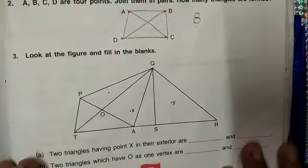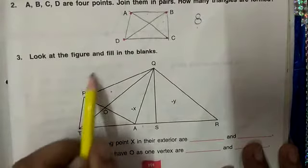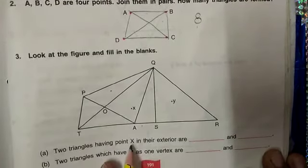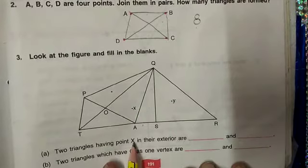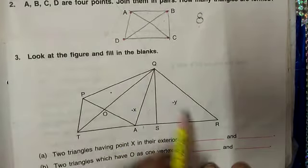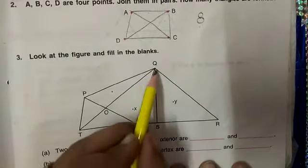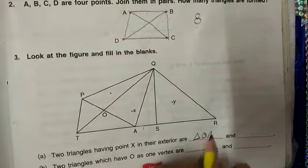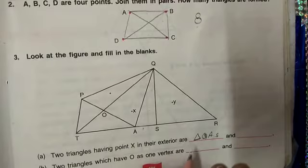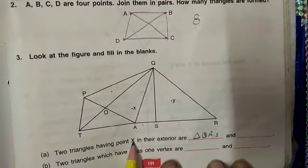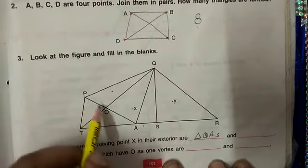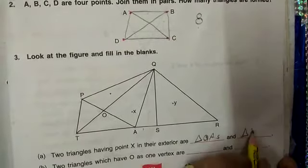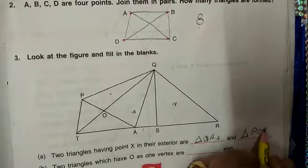Now, question number 3: Look at the figure and fill in the blanks. Two triangles having point X in their exterior. So many triangles are formed there. If I observe my triangle QAS, this triangle is having point X in its exterior. Similarly, triangle POQ, X is in exterior. And so many possible answers are there. You have to write any of these.